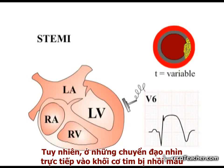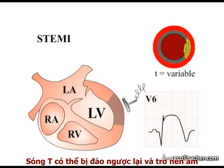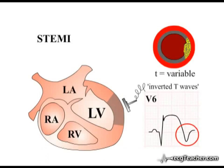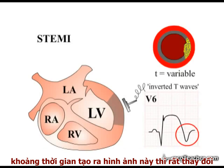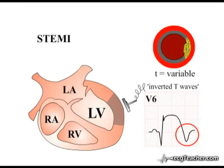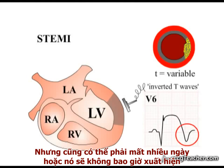However, in a lead looking directly at an acute MI, the T waves may flip and become inverted. The timing of this phenomenon is highly variable — it may occur early, in the hours following vessel occlusion, or may take days to develop, or may not occur at all.